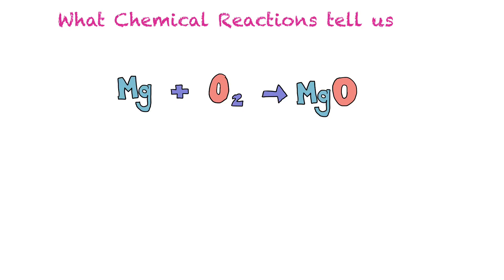First, let's figure out what chemical reactions are actually telling us. In this reaction, we have magnesium plus oxygen to make magnesium oxide. We need to check: is this reaction balanced? It's not. We have one magnesium here and one here, but we have two oxygens on one side and only one on the other. So we're going to have to put a two in front of MgO.